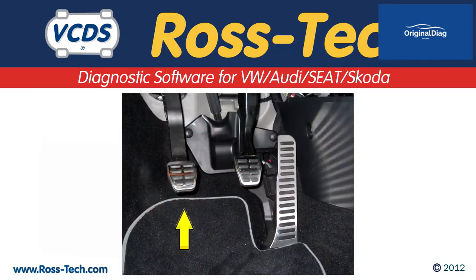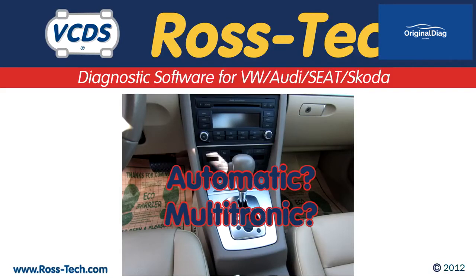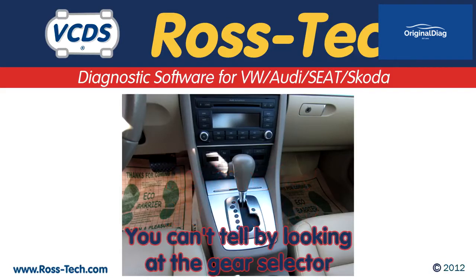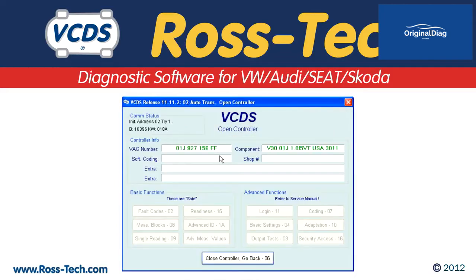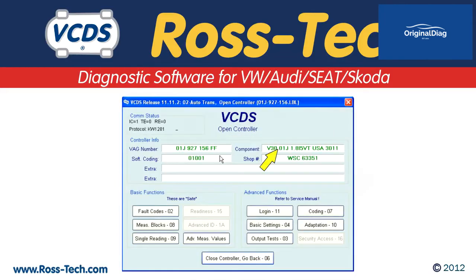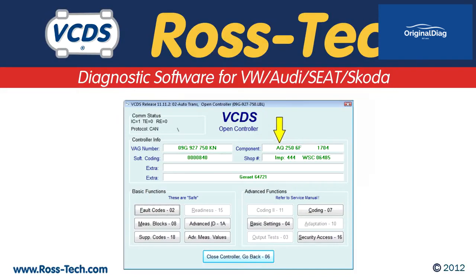Identifying a manual transmission is easy. Multitronic or automatic can be a bit confusing. Multitronic transmissions are the CVT type transmissions. When you scan the transmission control module, if the component field has 01J as it does with our 2003 Audi A4, then it is multitronic. If the component field does not have 01J, then it is an automatic transmission.